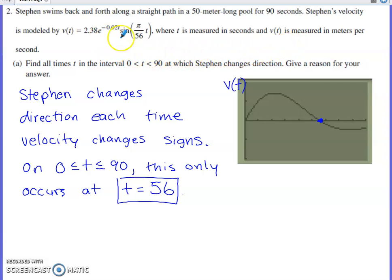Stephen's velocity is modeled by this function. T is measured in seconds, v of t is measured in meters per second. Part A asks us to find all values of time on the interval 0 to 90 at which Stephen changes direction. Give a reason for your answer.